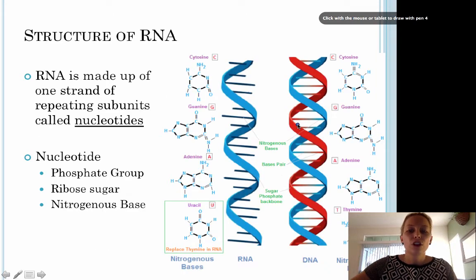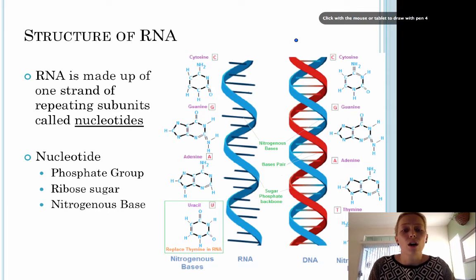Let's take a look at the structure of RNA. RNA is different than DNA in that it is made up of only one strand of repeating units called nucleotides. The structure of an RNA nucleotide is slightly different. It is made up of a phosphate group, a ribose sugar, and a nitrogenous base. The bases of RNA are exactly identical except for one base. RNA has cytosine, guanine, and adenine, which is the same as DNA. The base that changes is uracil, which replaces thiamine in RNA.